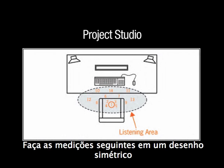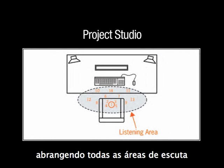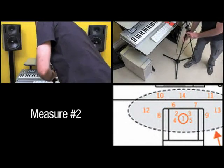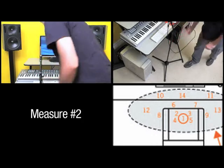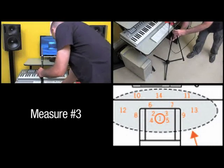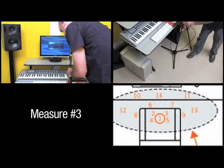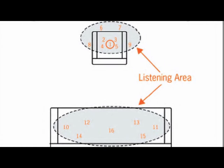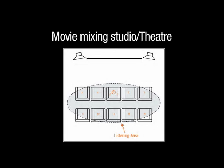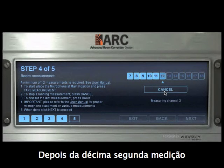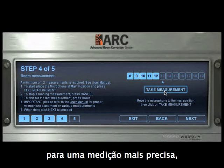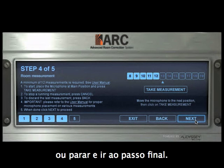Take the following measurements in a symmetrical pattern covering the entire listening area, as in this Project Studio example diagram. These are other example guidelines for different audio production setups. After the 12th measurement, you can choose to continue taking others, up to 32, for a more precise measure, or stop measuring and proceed to the last step.